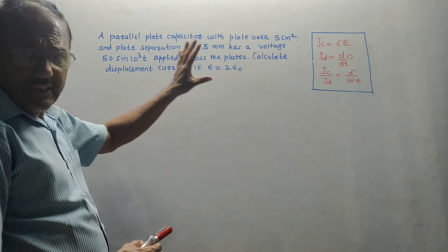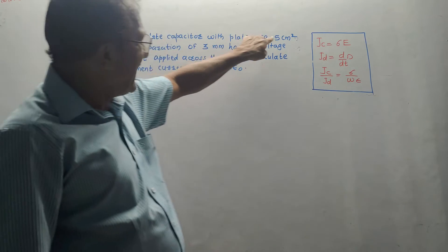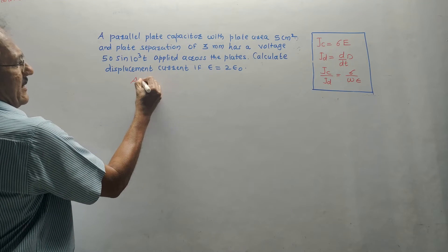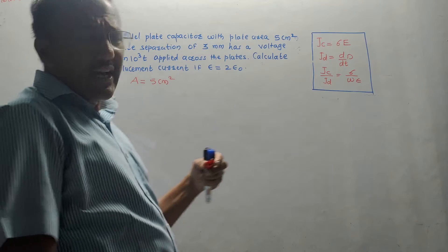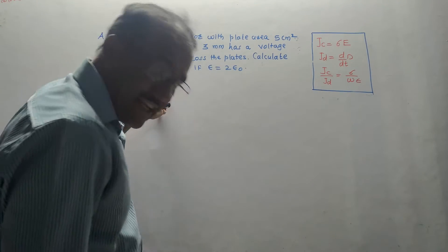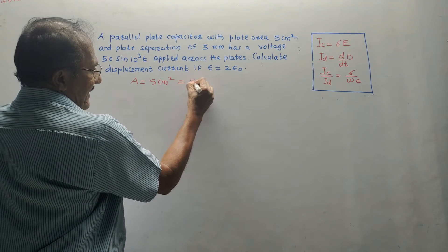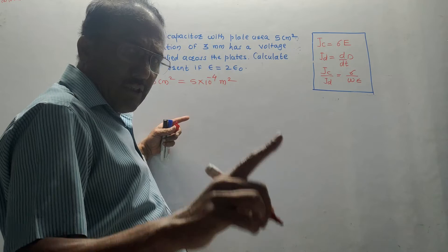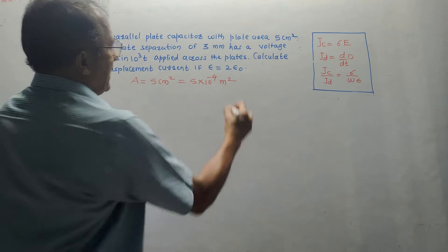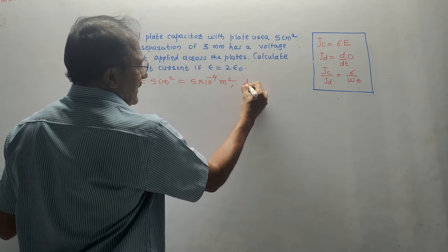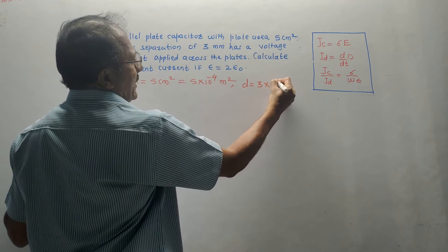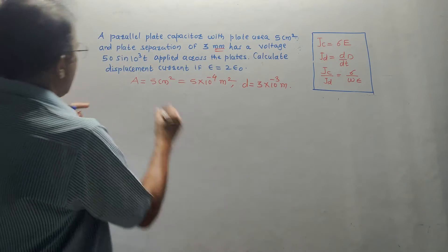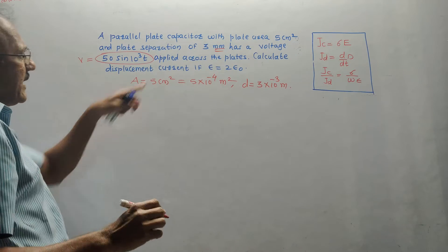The next variation: a parallel plate capacitor with plate area 5 cm², which converts to 5 × 10⁻⁴ m² — noting that since it's area (cm²), we use 10⁻⁴. Plate separation d is 3 mm, that is 3 × 10⁻³ meters. A voltage V equal to 50 sin(10³ t) is applied across the plates. We need to calculate the displacement current if epsilon equals 2 epsilon_0.